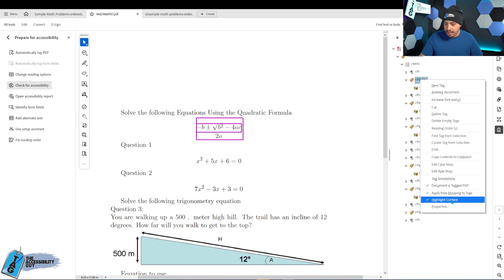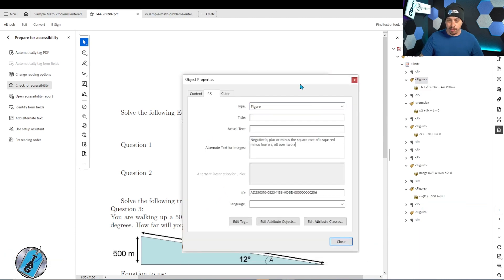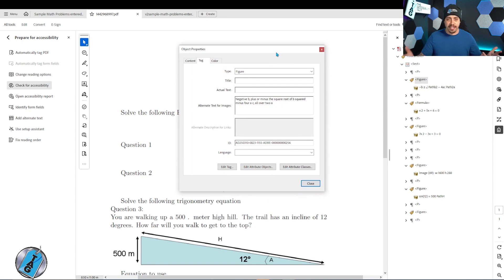And so in this example, we could right click the figure tag select properties and we could add that description instead for the alternate text. It just sort of depends.